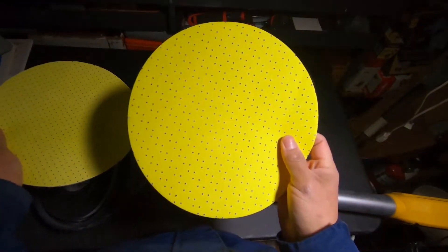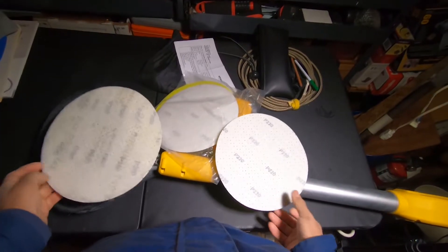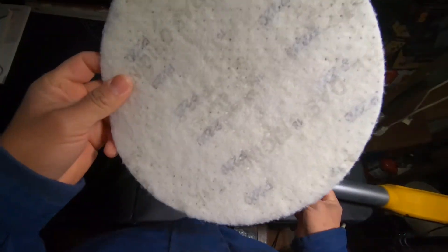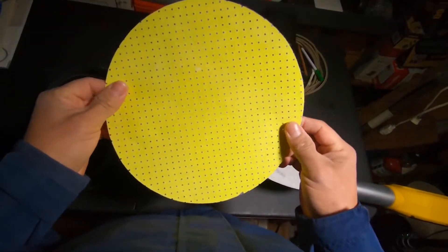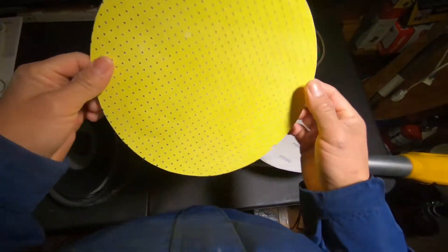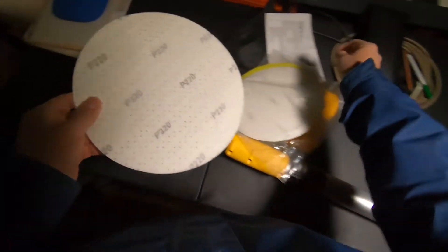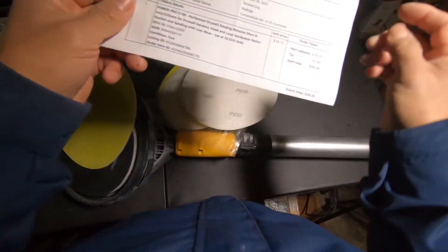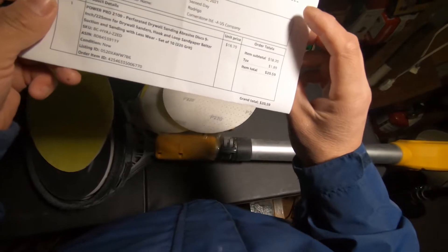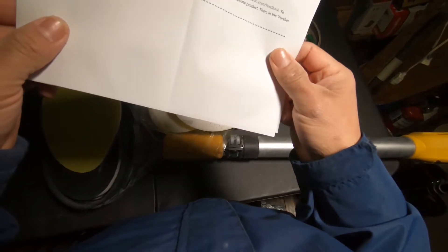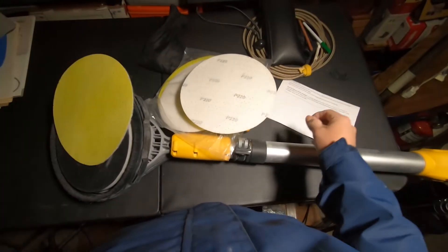So these were 40 dollars for a set and these are 20 for a set. So I don't know, I tried this and I like them, the Joists, the original ones made in Germany supposedly. And these ones, I don't know where they're from, but maybe they're made in China, who knows. Anyways, that's all I wanted to show you.